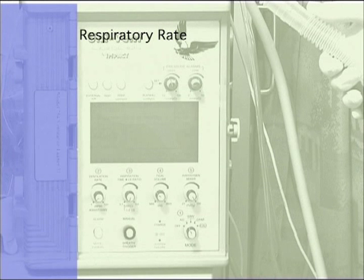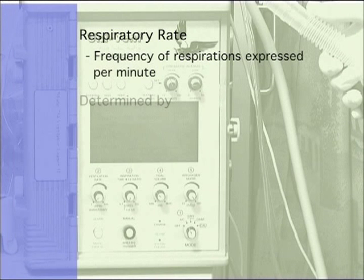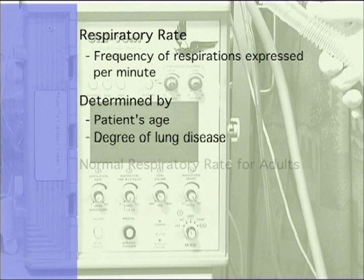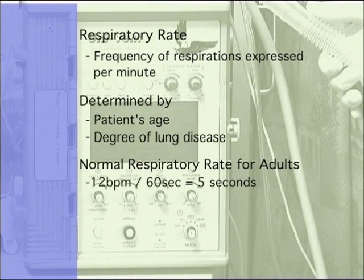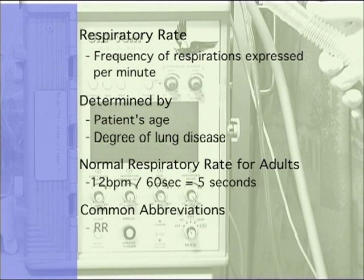Respiratory rate. The respiratory rate is the frequency of respirations expressed per minute. The care provider determines the respiratory rate primarily based on the patient's age and degree of lung disease. Normal respiratory rates for healthy adults range from 12 to 18 breaths per minute. A rate of 12 breaths per minute is equal to one breath every five seconds. Sometimes respiratory rate is abbreviated with RR or F for frequency.